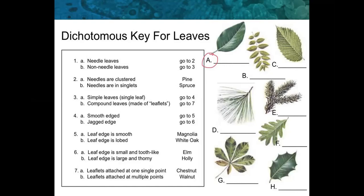Then you go to leaf B and do the same thing — you always start at number one. Does it have needle leaves or non-needle leaves? Non-needle. Go to three. Simple or compound? Go to seven. Are the leaflets attached at one single point or multiple points? That's a walnut. Now you've got this one — you're done. Now you go to the next and start where? One. Does everybody understand? Always start at one.